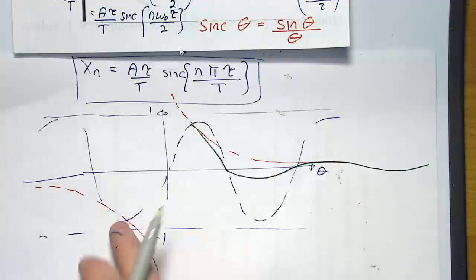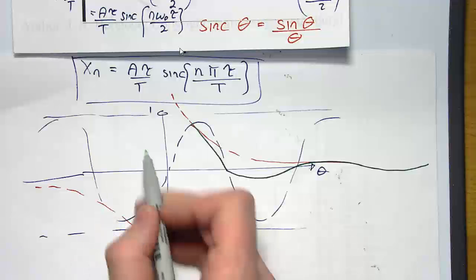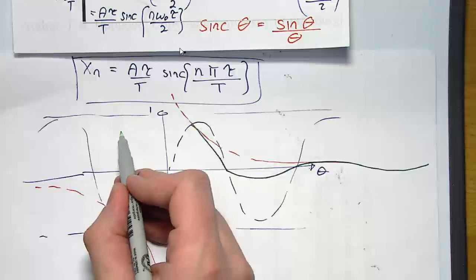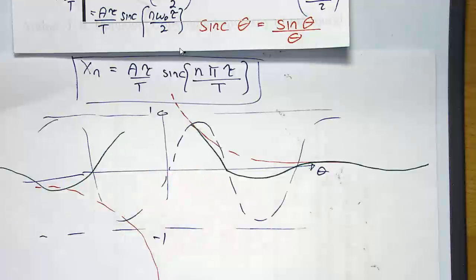If we look at the negative bits, around this region we've got a negative number multiplied by a negative number, so in fact we get the same shape. And this function is in fact even, and you'll come up with a waveform like that.